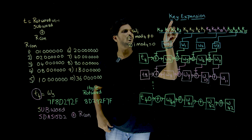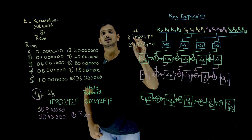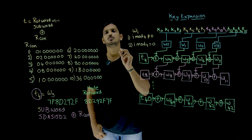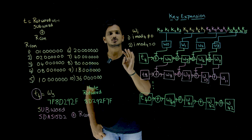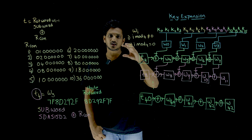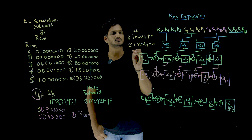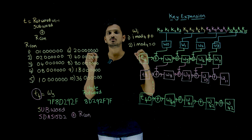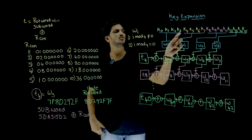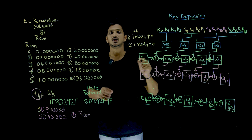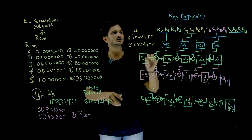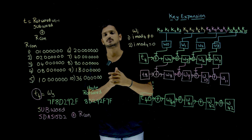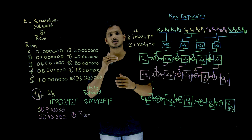Key expansion in AES is done word by word. A word here is considered as 32 bits, which means 4 bytes. So suppose you have a randomly generated 128-bit key. That 128-bit key is divided into bytes — you are going to get 16 bytes. Assume those are K0, K1, K2, K3, K4, K5, and so on — these are 16 bytes. Now from this key we need to generate 11 different keys. Let us try to understand how those keys are generated.